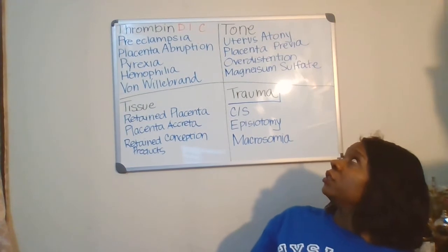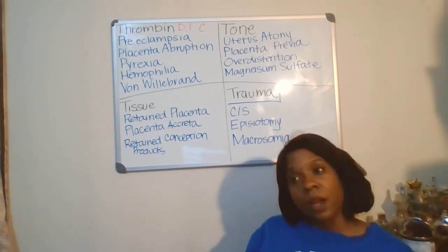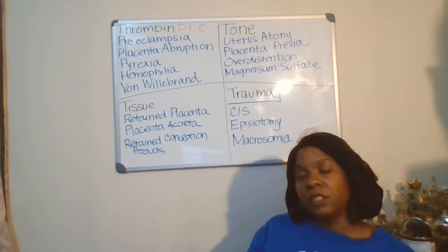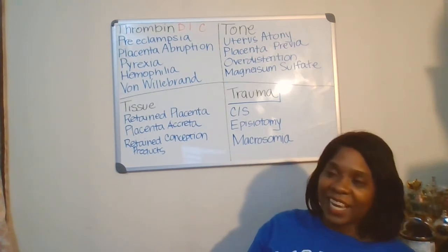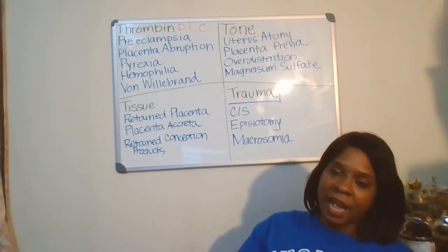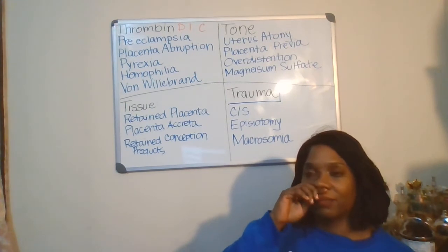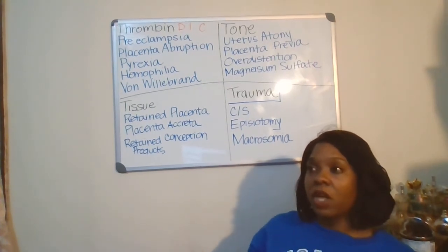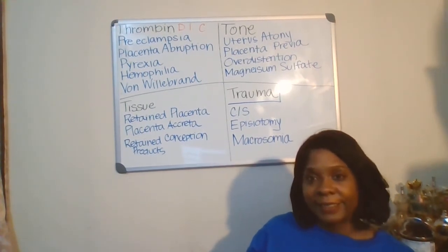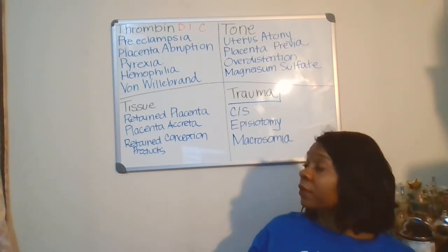Next one is tone. When we're talking about tone of the uterus — things that can happen that can make you bleed — is uterine atony. I'm going to go into detail in another video, but uterine atony is a condition where the uterus is boggy and is not firm. A boggy uterus indicates that the uterus is not involuting and is bleeding somewhere.